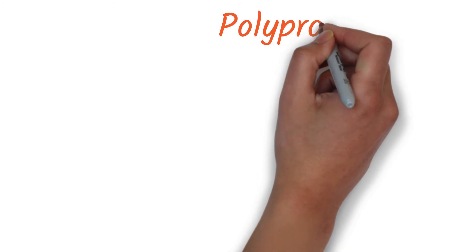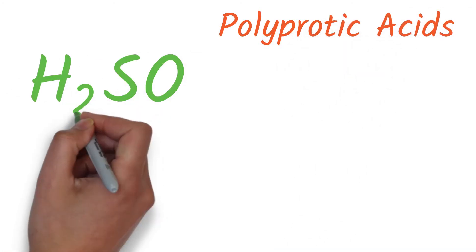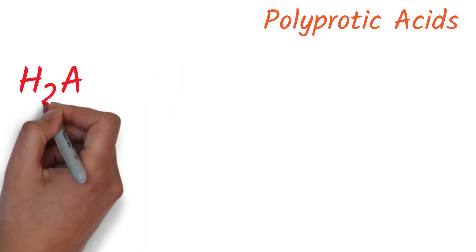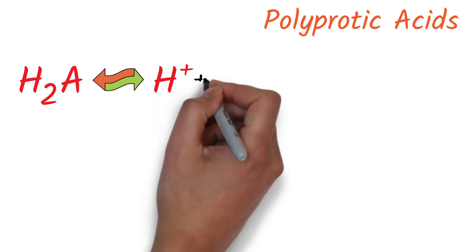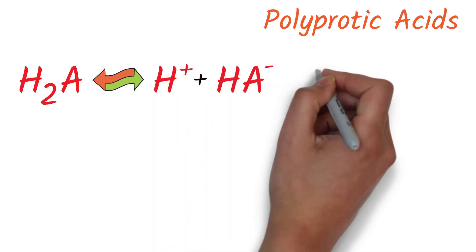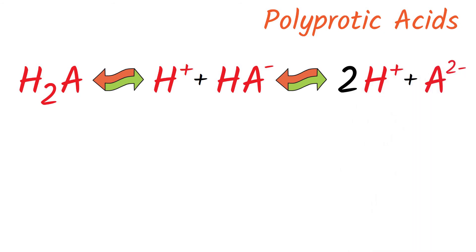Some weak acids have two or sometimes three protons that they can donate. These are called polyprotic acids. Take this generic diprotic acid equation. We can think about this in two steps, with one proton removed at each step. This would give us a second equation like this. The Ka for the first step would be defined as this.